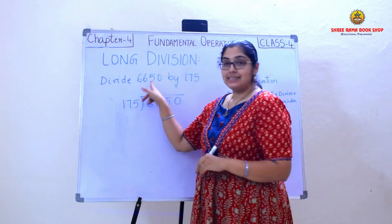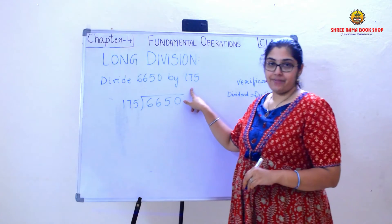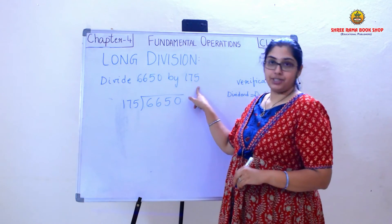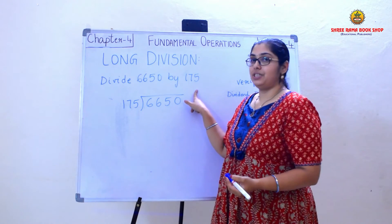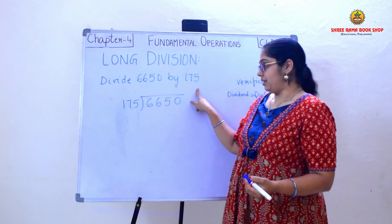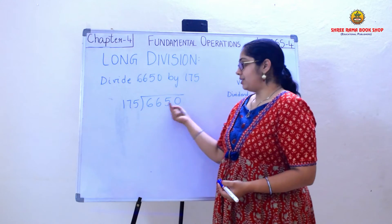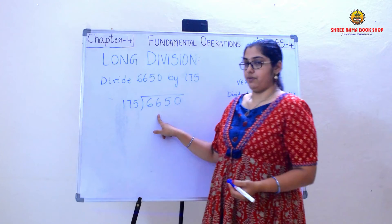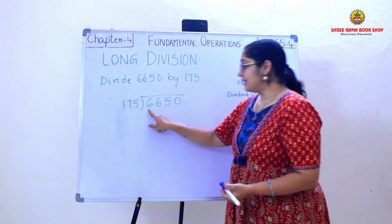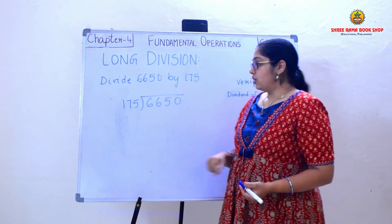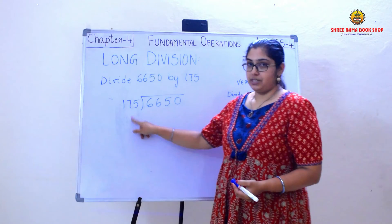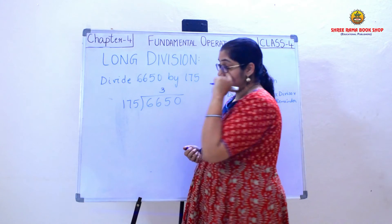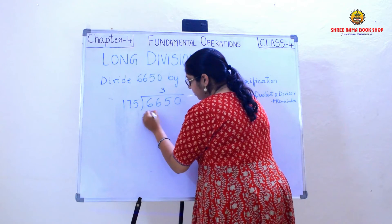Now I have one more example on the board for long division: divide 6650 by 175. You can observe that now the divisor is a 3-digit number. Previously it was a 2-digit and a single digit number. So I need to consider the first 3 digits because it is a 3-digit divisor — that is 6, 6, and 5. In the multiplication table of 175, the nearest number is 3 times 175 which is 525.